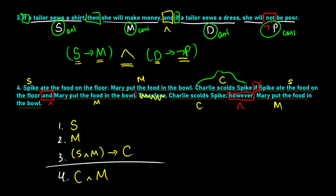So this entire argument translates into four sentences: S; M; (S AND M) → C; therefore C AND M. This makes sense logically: S is true and M is true, so both are true. Since S AND M are both true, C is going to be true. Therefore we can conclude C is true, and because we already know M is true from sentence two, we know M is true as well. That's all for this video — if you have any questions, feel free to post them in the comments below.